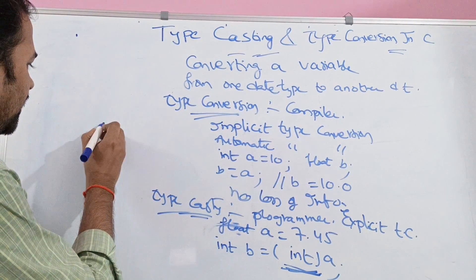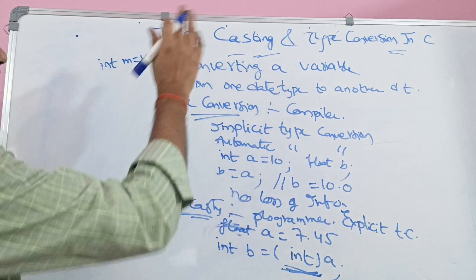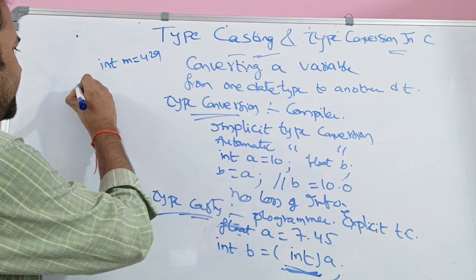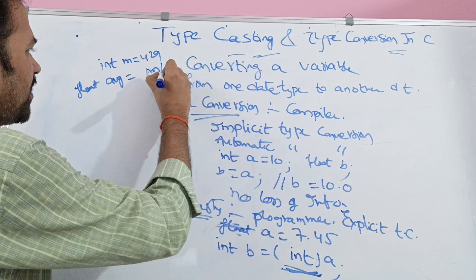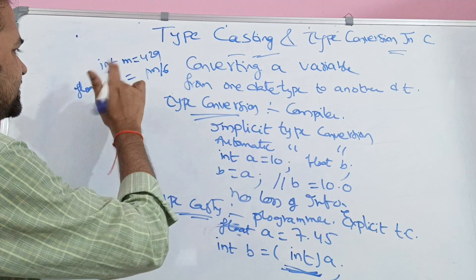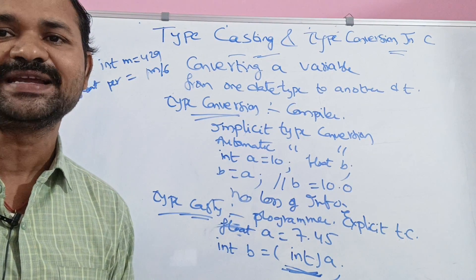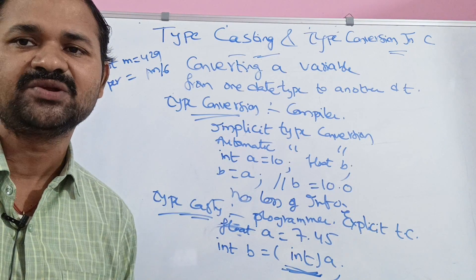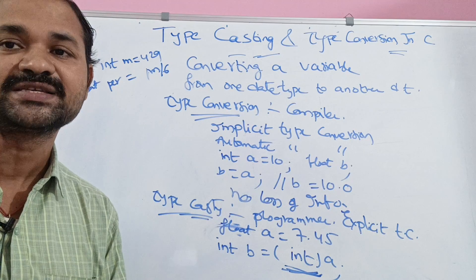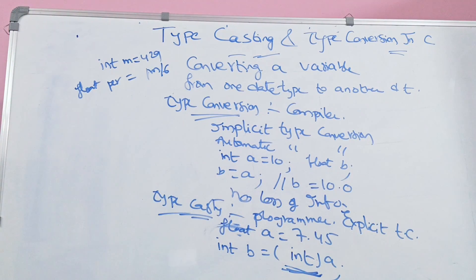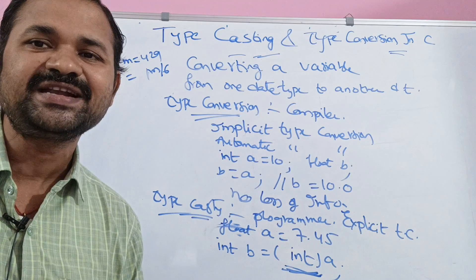Let's take another example. Assume we have a variable called marks with value 429. We want to calculate the average: float percentage = marks / 6. Since marks and 6 are both integers, integer divided by integer always gives an integer. So 429 / 6 gives 71, and percentage contains 71.0.